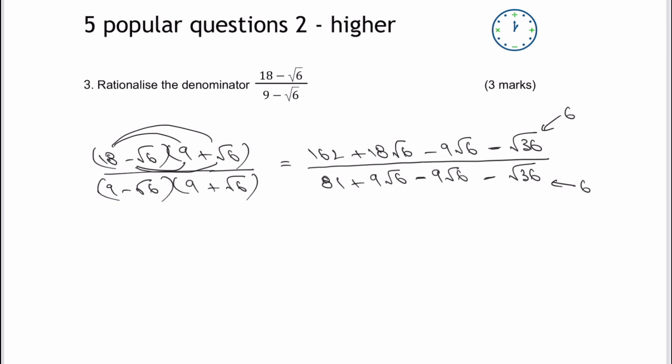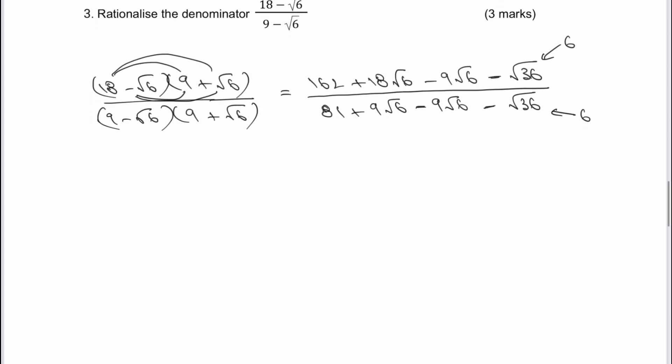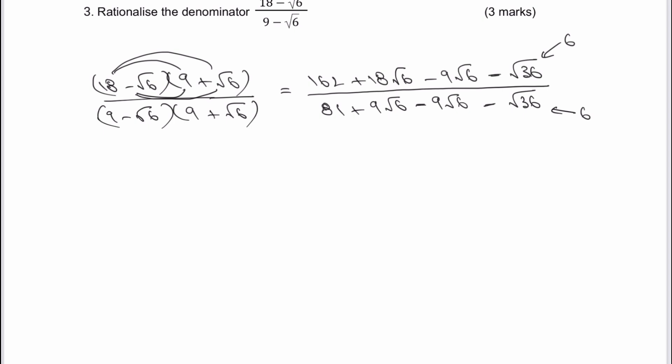And then really, it's just a case of tidying this up a little bit more. So what I'm going to end up with at the top, the numerator is 162. And then that's going to be basically minus six. So 162 minus six is going to give me 156. And then I've got plus 18 root six minus nine root six. Well, that's going to give me nine root six.